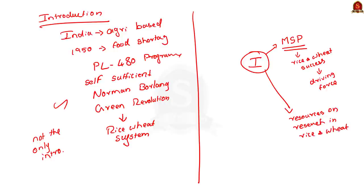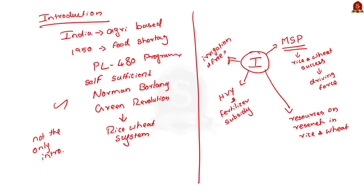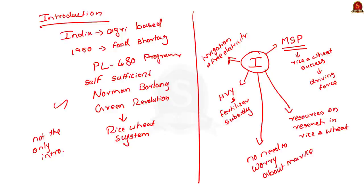The government also subsidized high-yielding varieties of seeds and fertilizers that aid production of rice and wheat. Finally, the government improved the availability of irrigation by providing free electricity and allowing free exploitation of groundwater. In some regions like the Tanjur region in Tamil Nadu, three rice crops are produced every year. With assured procurement by the government, farmers don't have to worry about market forces — they just produced and sold to the government. One additional point is the food preference of people in India, where rice and wheat are the staple food grains, which also contributed to the success of this system.